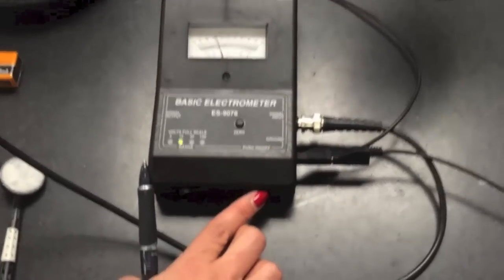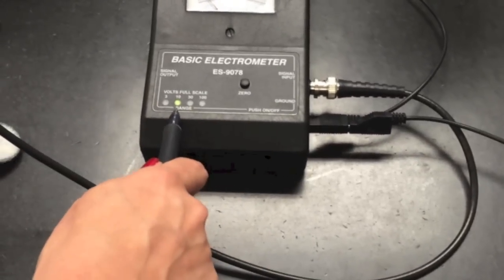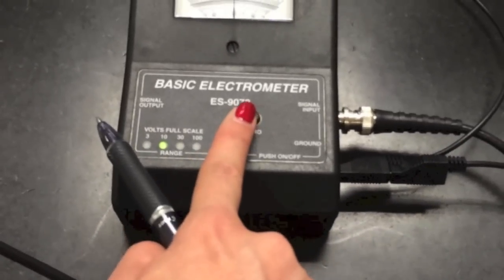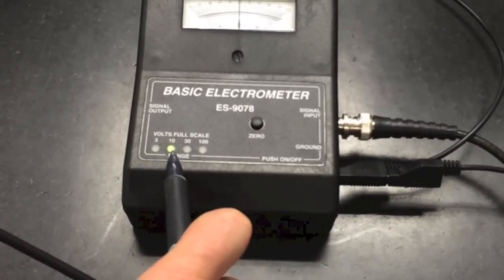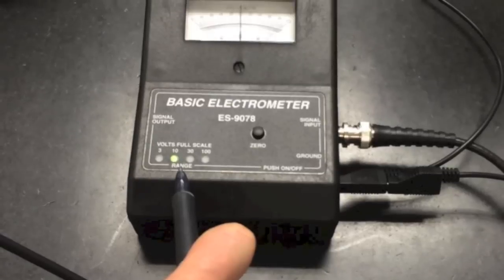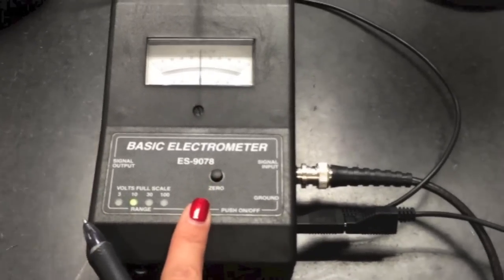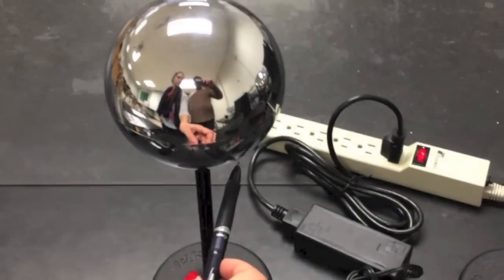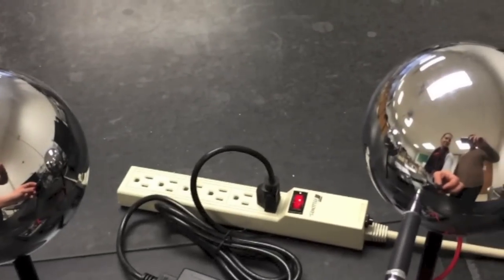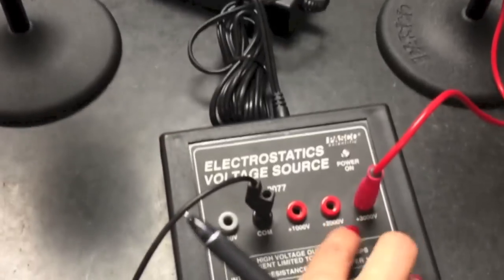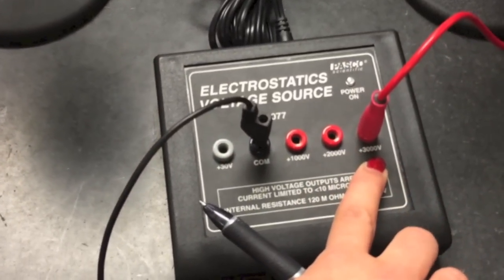Now let's turn on the electrometer. The range for the voltage is set to 10 volts. Make sure you zero the electrometer constantly. If this LED light is blinking, that means the batteries have to be replaced. Please ask your TA for help. We have one sphere and another sphere connected to a 3000 volts jack on the electrostatic voltage source.